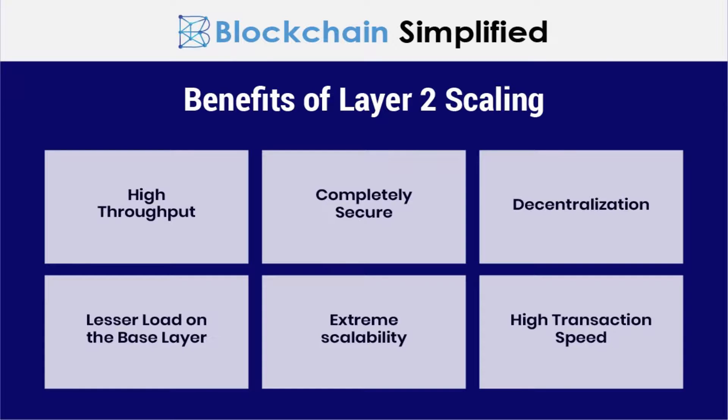In other words, transactions can go through very cheaply and very quickly without sacrificing network security. A great portion of the work that would have been performed by the layer one chain has now moved over to the second layer. So while the main chain provides security, the second layer offers the throughput — being able to perform hundreds and thousands of transactions every single second.